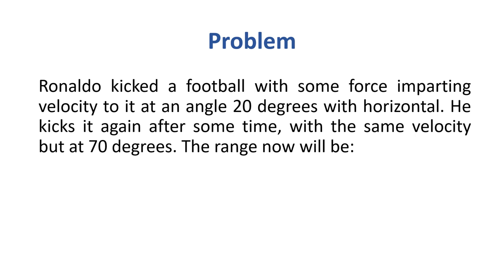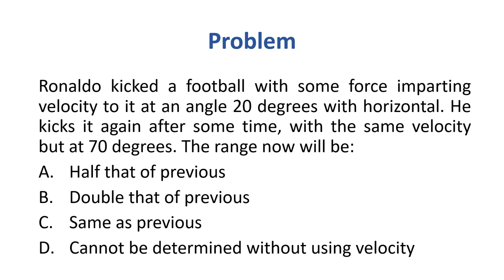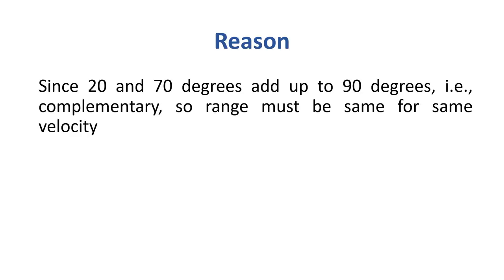Problem: Ronald kicks a football at 20 degrees with the horizontal, then kicks it again with the same velocity but at 70 degrees. What is the range now? Options: half, double, same as previous, or cannot be determined. Correct option is C — same as previous — because 20° and 70° are complementary angles (70 + 20 = 90), so the range must be the same.